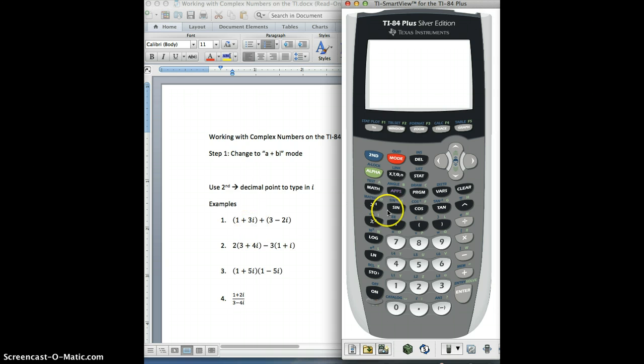So it's as simple as this. See problem number one? Go through and do a couple examples here. Use parentheses like they do. 1 plus 3, second decimal point, gives me the I, plus 3 minus 2I in parentheses. So it looks just like example 1 over there on the left-hand side. I hit enter, the answer is 4 plus I. Pretty slick, right?